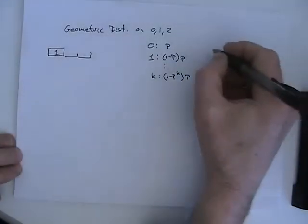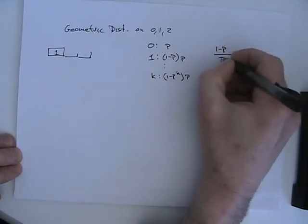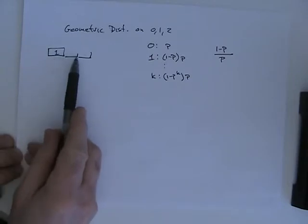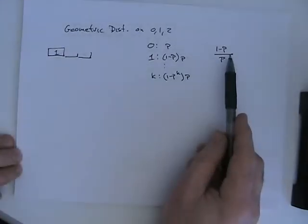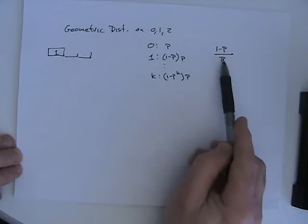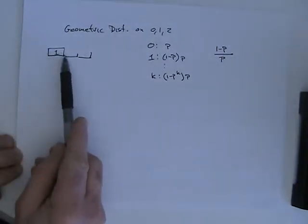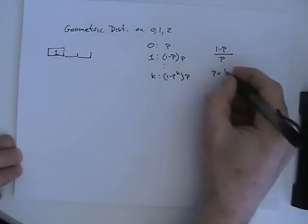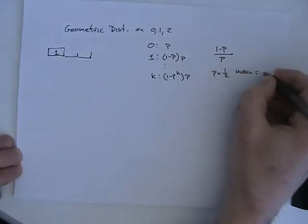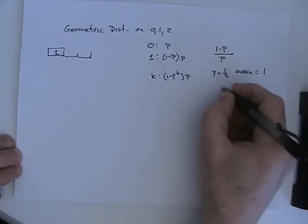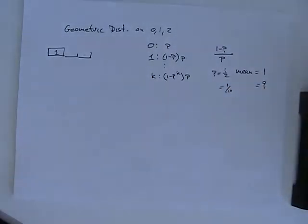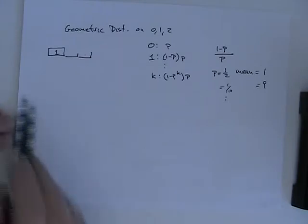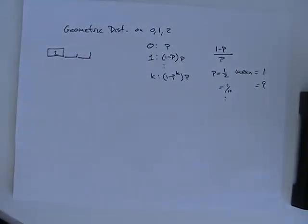For a coin flip where the probability is 1/2, the mean interarrival time will be 1. If the probability of an arrival is 1/10, it's going to be 0.9 over 0.1, so 9. Clearly, the lower the rate of arrivals, the longer the time between arrivals.